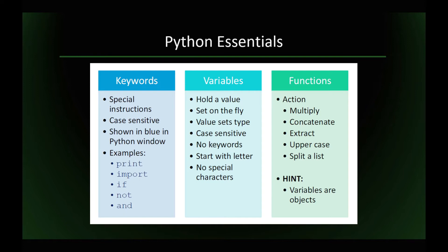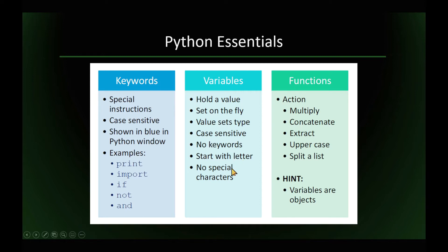You've already noticed when working with the Python window that we have different colors for different types of elements that make up our Python script. We have special keywords — we used some already, like print and if — and they are case sensitive. You must not use these as variables because you would go into conflict with Python. You can set variables; they hold a value and can be set on the fly with no pre-definitions required. They must start with a letter, not a number, and no special characters are allowed in variable names. In green, we have the functions that do things, like multiplications or extraction. These color codings are there to help you read the text more easily and find mistakes.